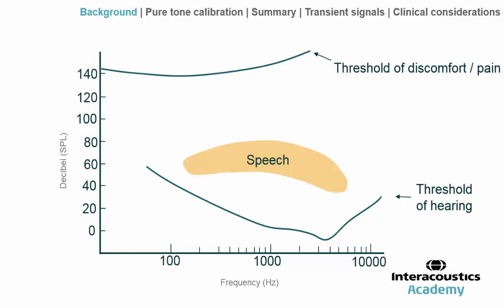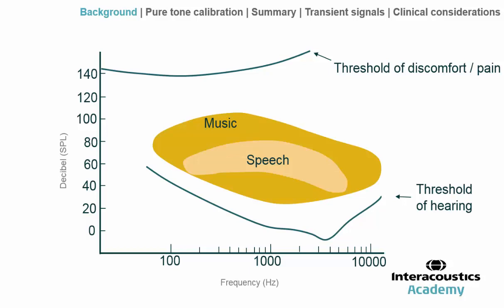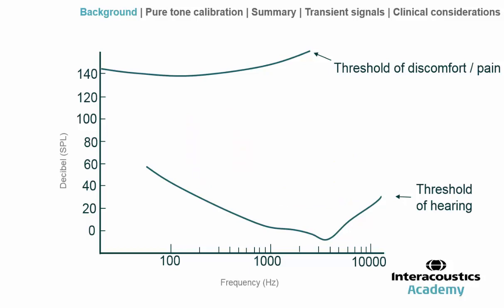If we add common environmental sounds, we have the speech range — commonly known as the speech banana, because of its rather banana-like shape — along with music and other environmental sounds. Going back to the way the threshold varies according to frequency: for diagnostic purposes, this is problematic because someone with the same hearing loss at different frequencies will present with different values when measured in dB SPL.